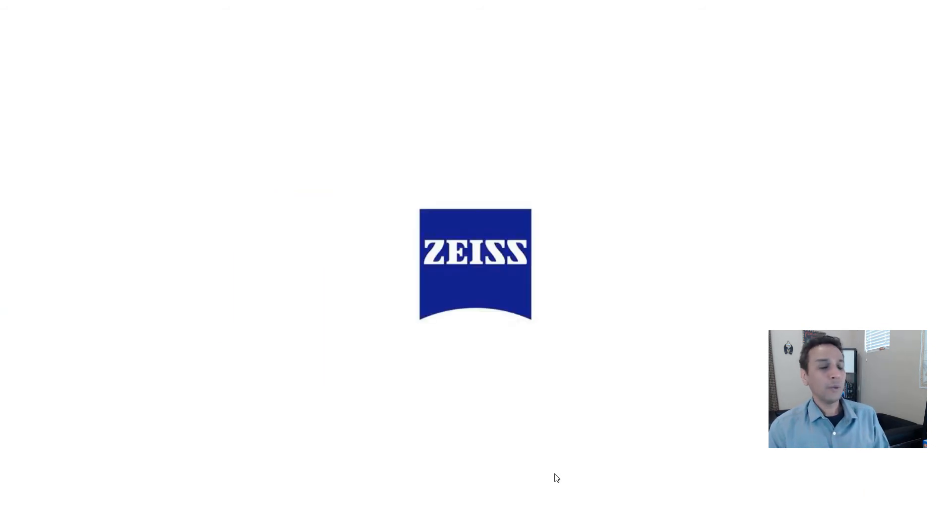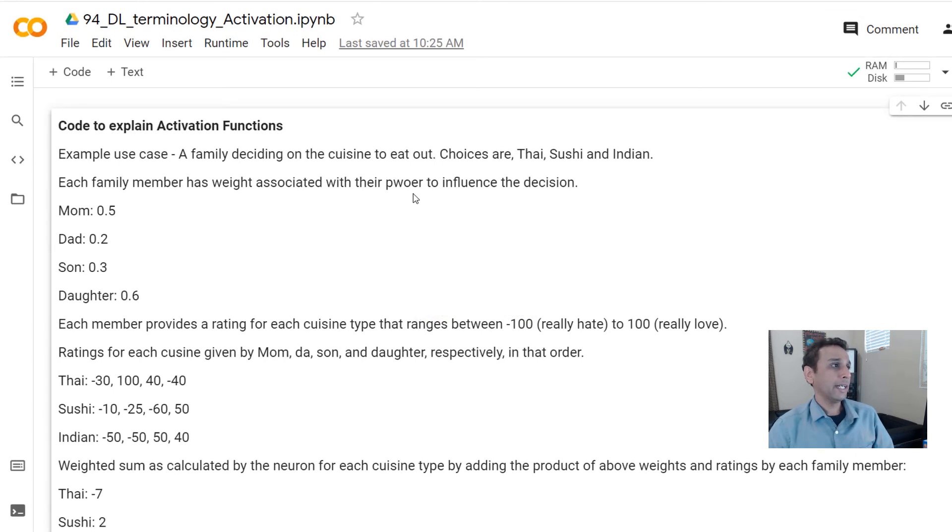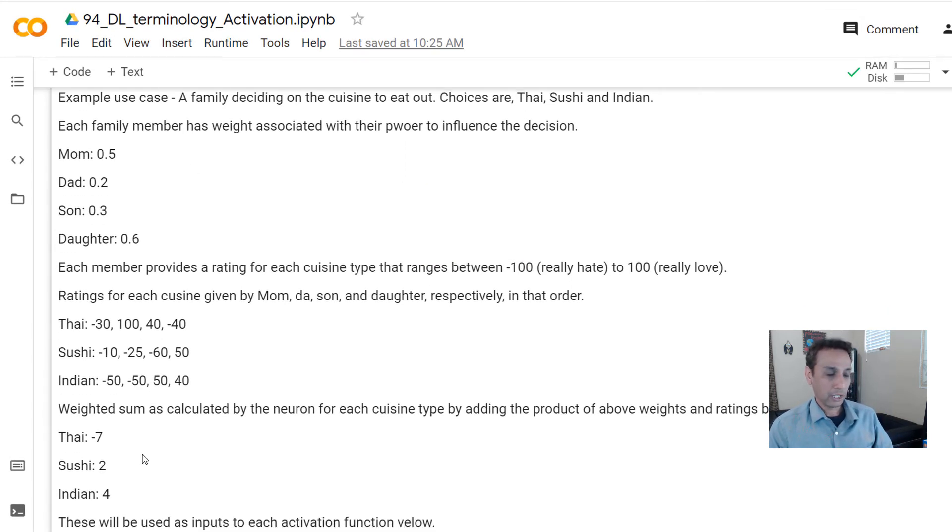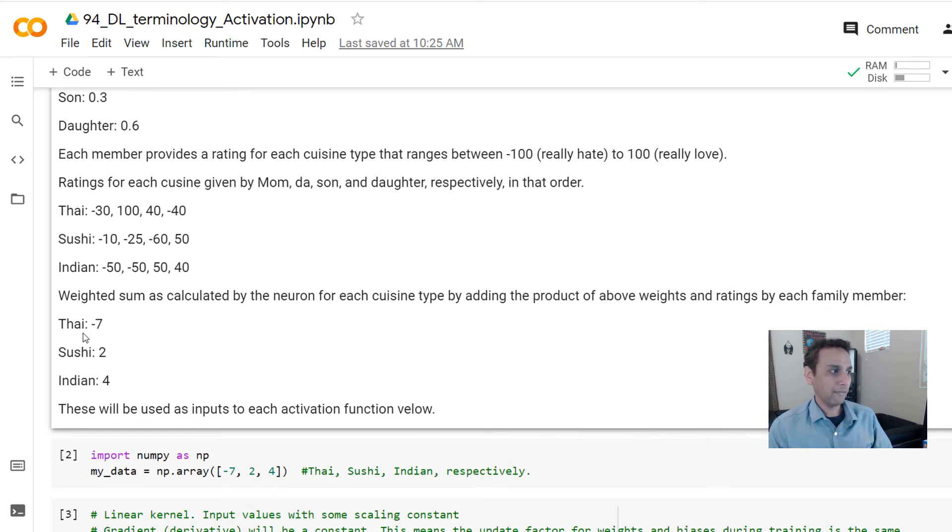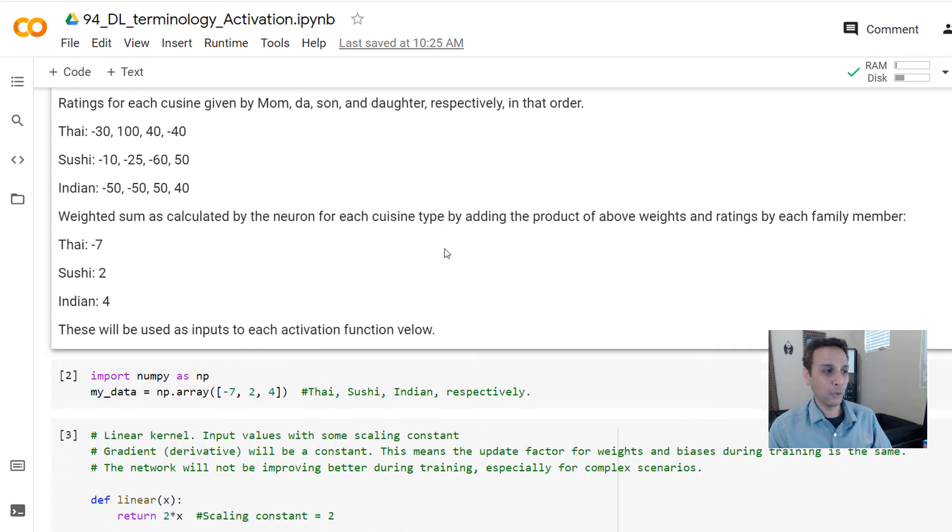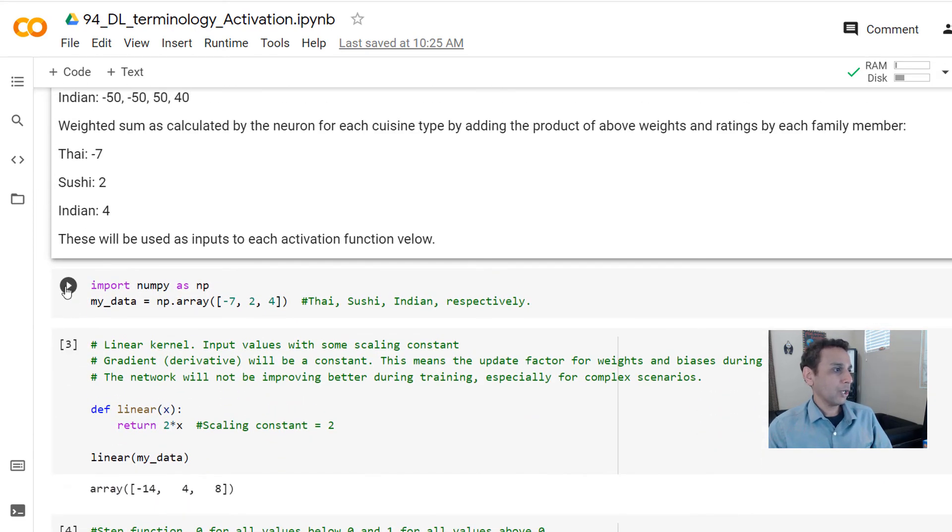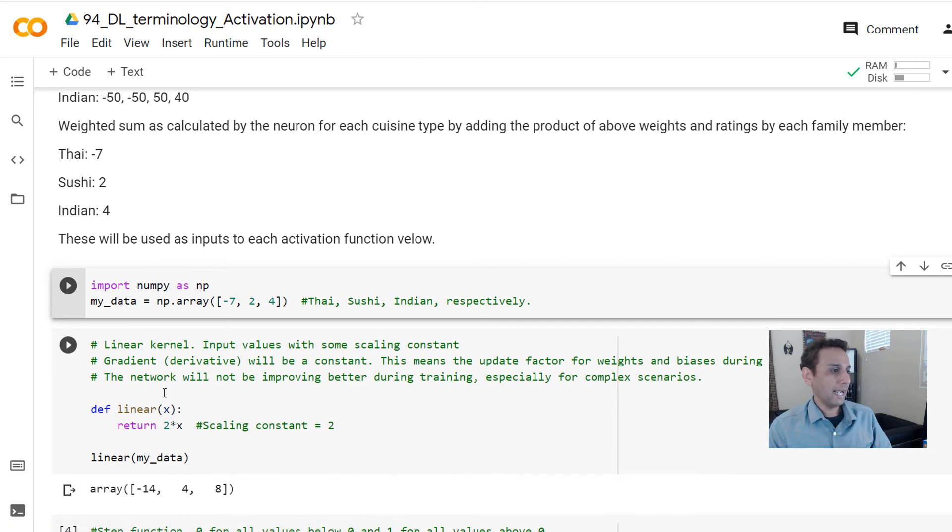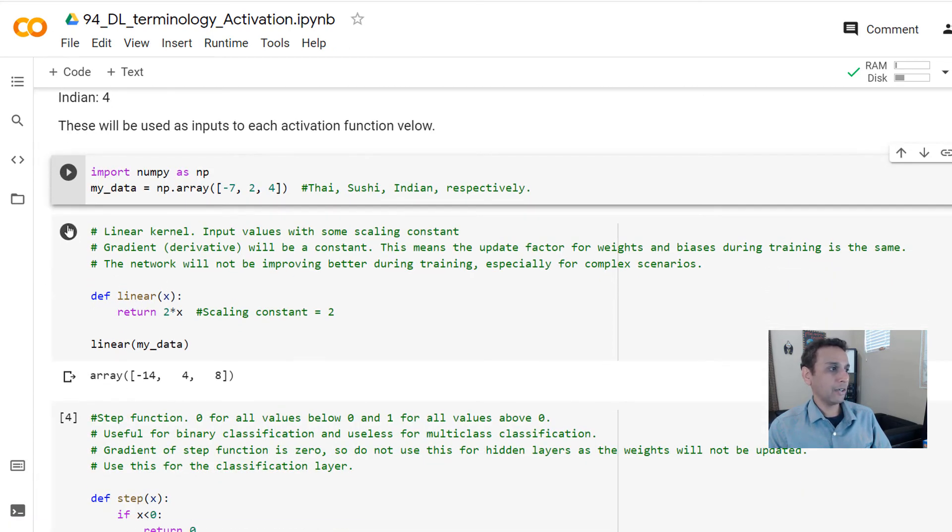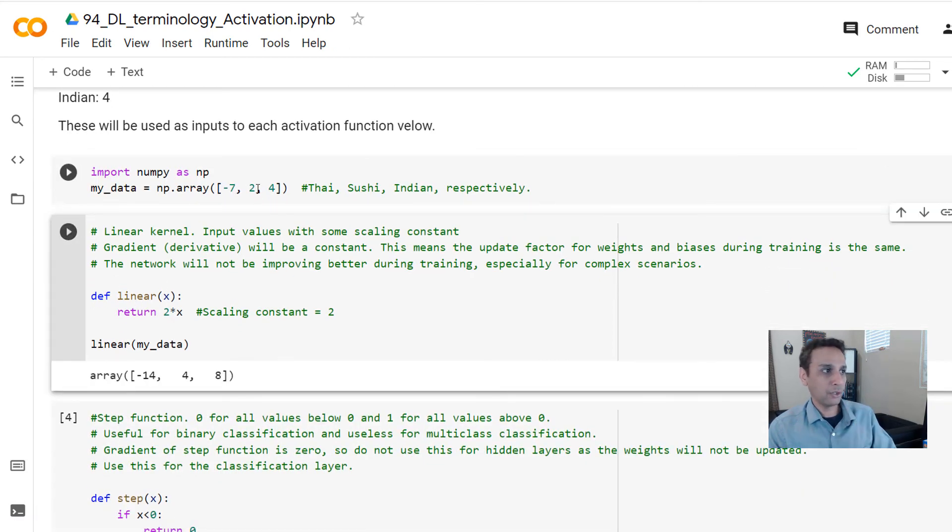So now let's jump onto our Colab notebook so we can quickly look at these using the example that we just established. Here's the notebook and I'll share this with you. I made a quick description of what we are talking about and eventually this is Thai, sushi, and Indian, minus seven, two, and four. And how do these various activation functions actually behave?